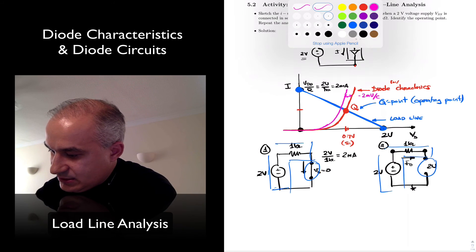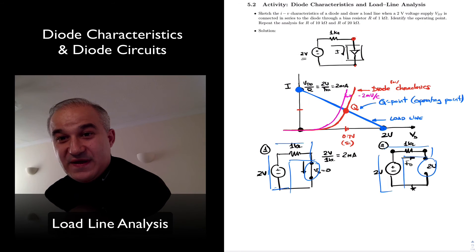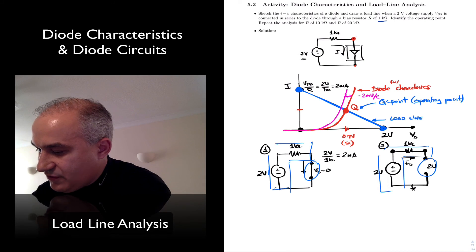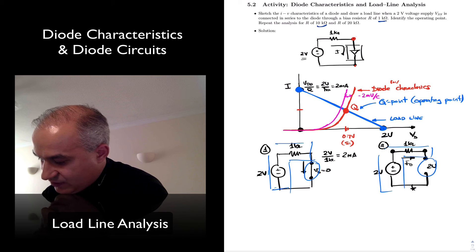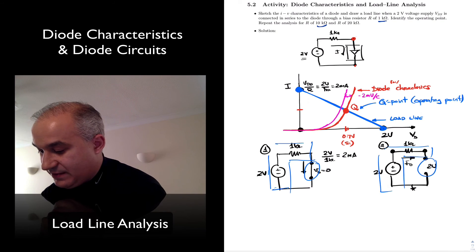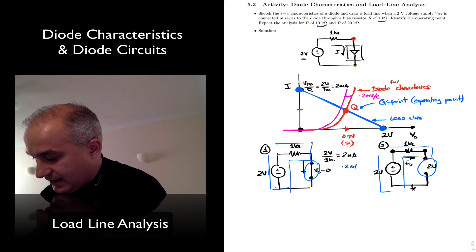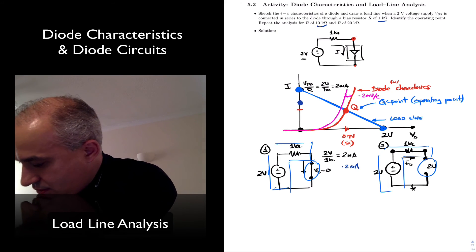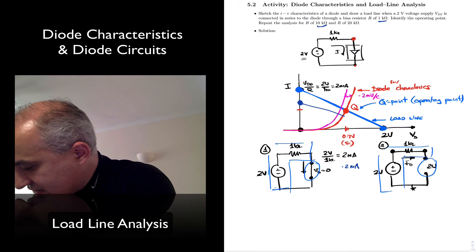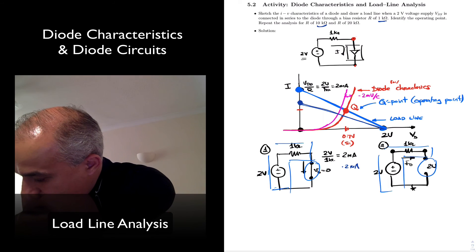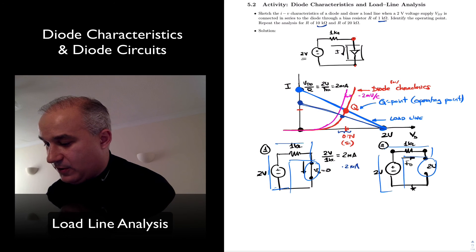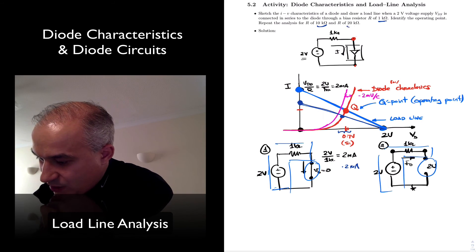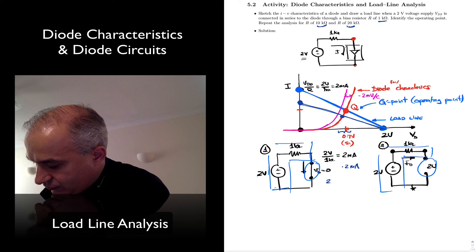Another remark: these load lines are a function of the external circuit. That's why we are asked — let's do it for 1k, but what about 10k? If you do it for 10k, instead of having 2 milliamps you'll have 2 volts divided by 10k, so 0.2 milliamps — plotted right here. The voltage stays the same, so it will operate slightly less. It's always very close to 0.7 volts, and that's why the second-order model is a pretty good approximation. For 20k it will be 2 volts over 20k ohms, or 0.1 milliamps.